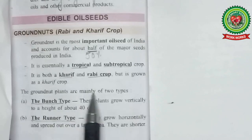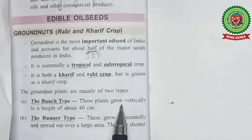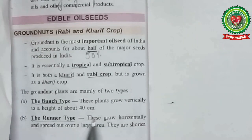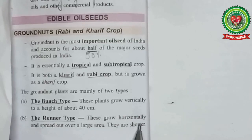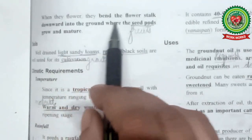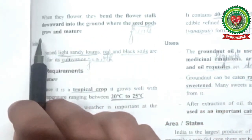The groundnut plants are mainly of two types. The bunch type: these plants grow vertically to a height of about 40 centimetres. The second is the runner type: these grow horizontally and spread out over a large area — they are shorter. Children, 50% of this runner type of groundnut is used to make peanut butter. When they flower, they bend the flower stalk downwards into the ground where the seed pods, that is fruits, grow and mature.